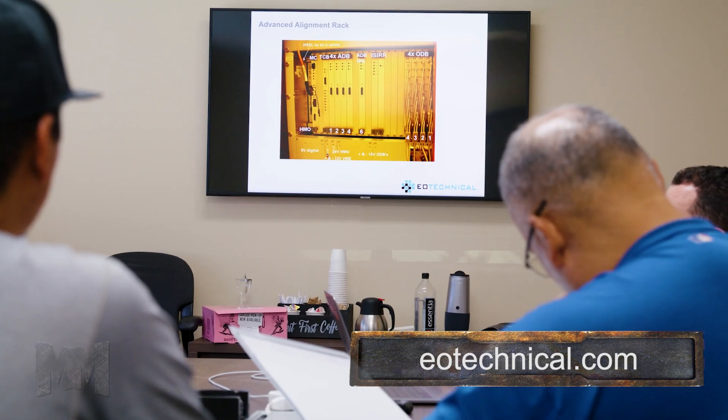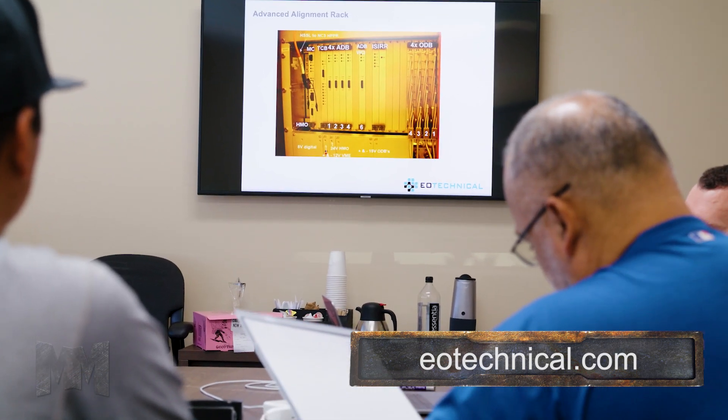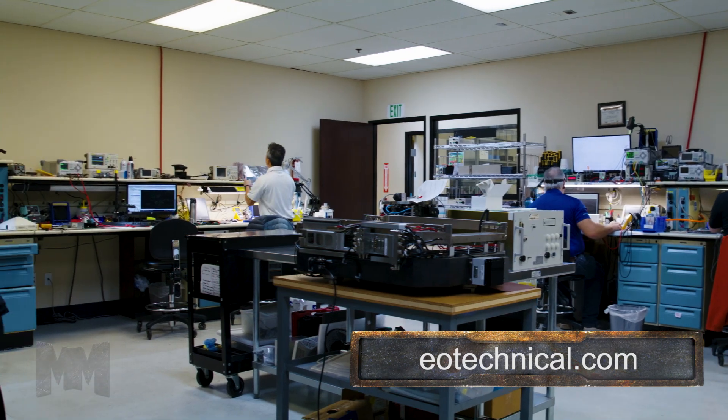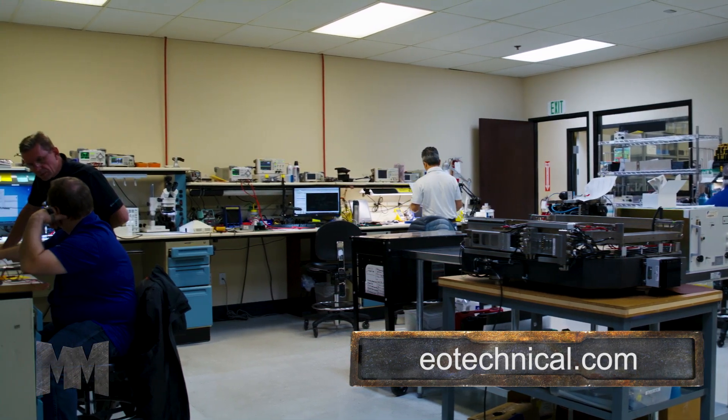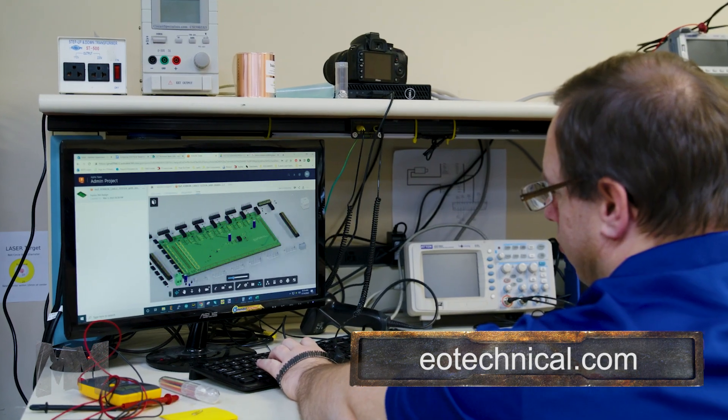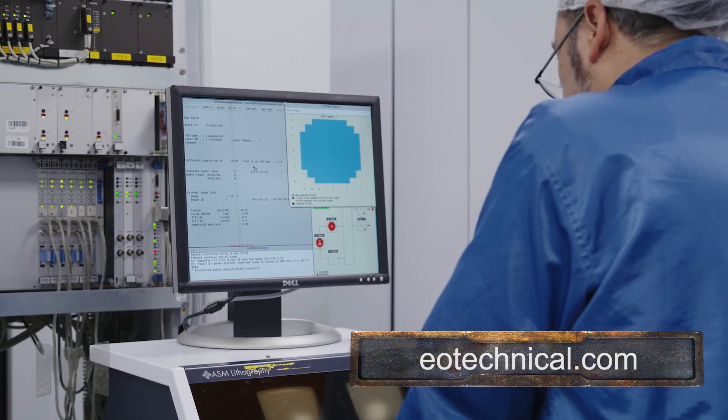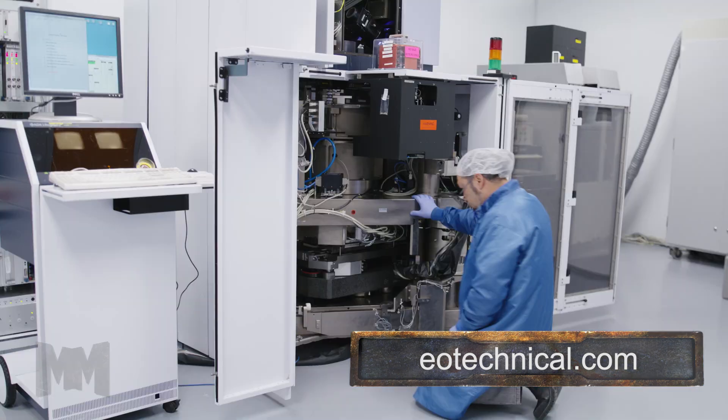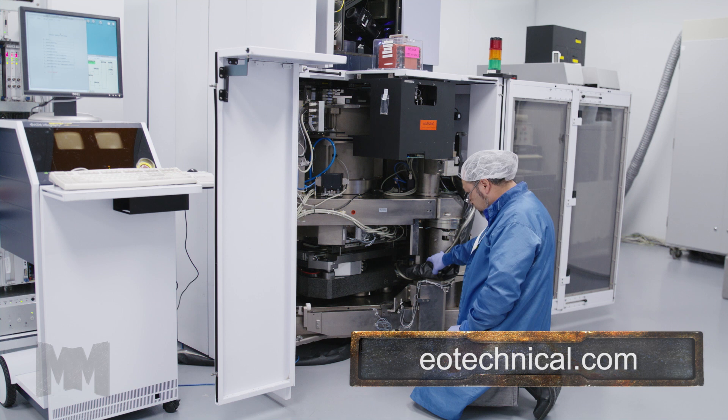Today, the majority of the modern world utilizes ASML equipment among universal applications. EO Technical Solutions not only supports older 200mm semiconductor equipment produced by ASML, but also the much earlier generation ASML 2500 and 5000 lithography systems.